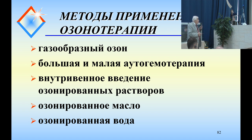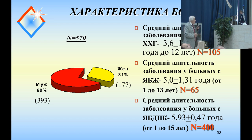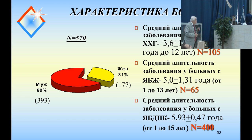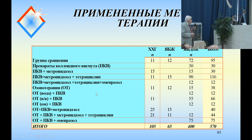The approaches we used are shown on the screen: intravenous application and rectal application were used. The total number of patients is 570. The most prevalent group is 69 males. Average age is indicated on screen. 105 cases of chronic gastritis, 65 cases of digestive tract and stomach disease. These are the approaches we have implemented regarding Helicobacter pylori.